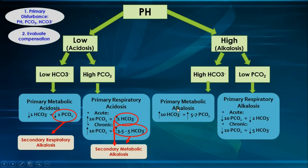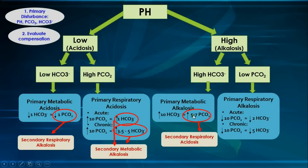For primary metabolic alkalosis, the expected compensation ratio is approximately five to seven units increase in pCO2 for every ten units increase in bicarbonate, achieved through hypoventilation by the lungs — called secondary respiratory acidosis. If the increase in pCO2 is too high (more than five to seven units per ten units increase in bicarbonate), you have a mixed primary metabolic alkalosis and primary respiratory acidosis. If the increase in pCO2 is too small, you have a mixed metabolic alkalosis and primary respiratory alkalosis.